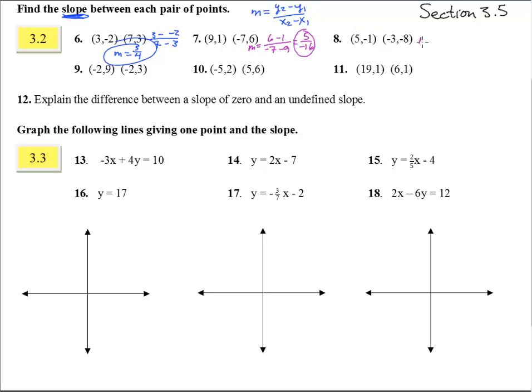Here we have m equals negative 8 minus negative 1 over negative 3 minus 5. Notice when you're subtracting a negative number, you put both negatives in there, and we end up with negative 7 over negative 8. The two negatives when you're dividing go away, and we end up with positive 7 eighths for our slope.